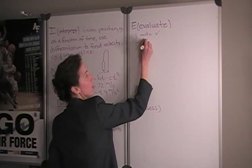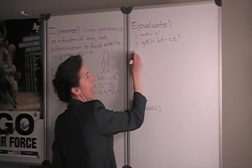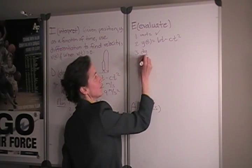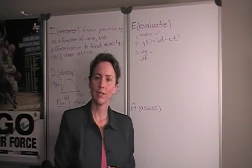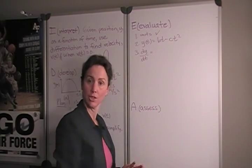Next, we'll recall our position function, and then we will take its first derivative as a function of time. We can use the power rule of differentiation to do this. The first term, the derivative of bt, is just b.